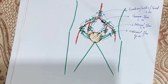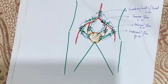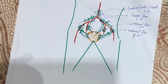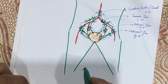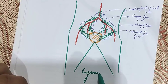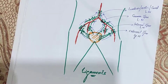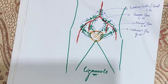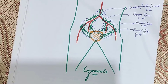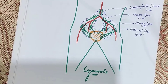This lecture was about the lymphatic drainage of the urinary bladder. In the next lecture, we will discuss the ligaments of the urinary bladder, which should be the last lecture on the bladder, and then we will move on to discuss the urethra and ureters.